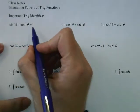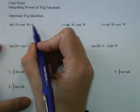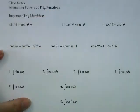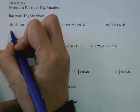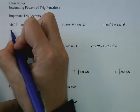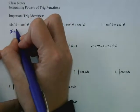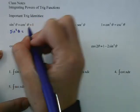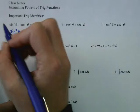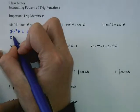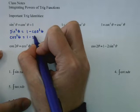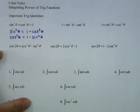First is the Pythagorean identity: sine squared plus cosine squared equals 1. This is important. It also allows us to write sine in terms of cosine and cosine in terms of sine. So sine squared theta equals 1 minus cosine squared theta, and cosine squared theta equals 1 minus sine squared theta.